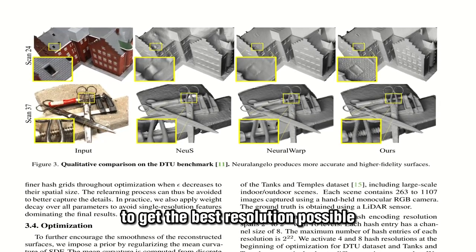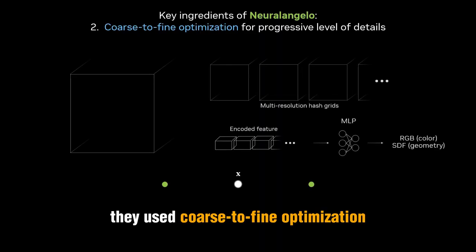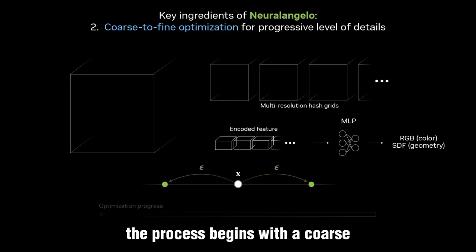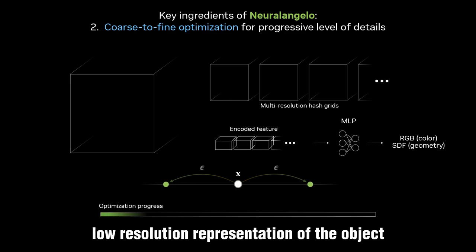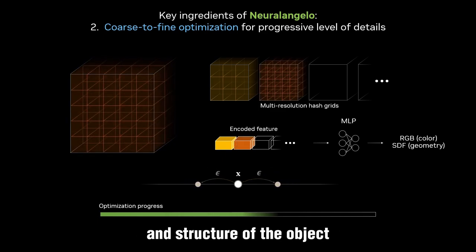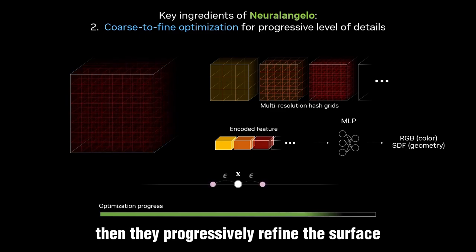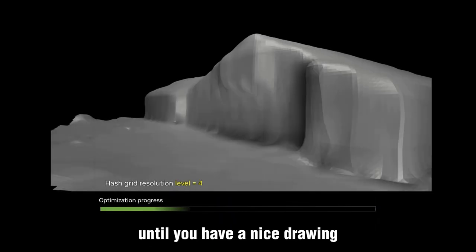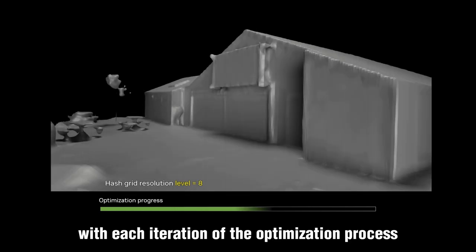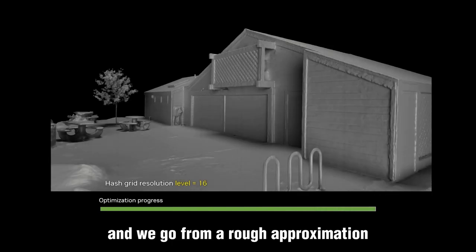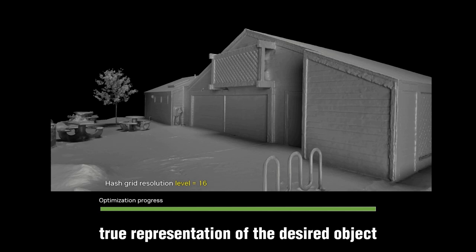The final step, to get the best resolution possible, is coarse-to-fine optimization on the hash grids. The process begins with a coarse, low-resolution representation that captures just the basic shape and structure of the object. Then they progressively refine the surface by adding more detail at higher resolutions — like a drawing where you start with a rough sketch and gradually add more details. With each iteration, the model becomes more accurate, going from a rough approximation to a high-resolution, true representation of the desired object.